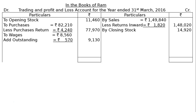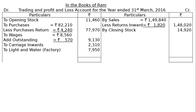Other factory expenses: carriage inward rupees 2,310. Light and water — if it is factory-related it will be shown in the trading account as a manufacturing expense; if it is office-related it will be shown in the profit and loss account. The credit side totals to rupees 1,62,940.